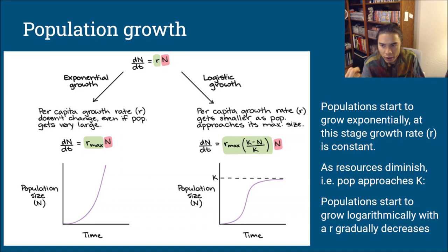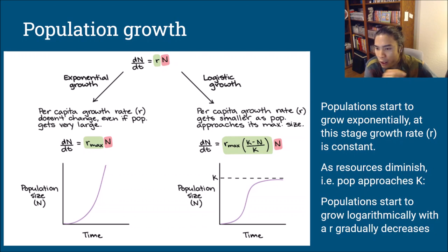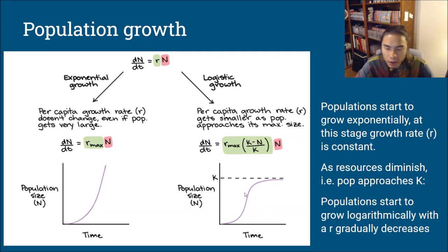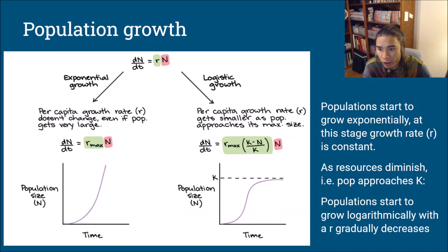Populations usually grow exponentially at the beginning — you start off small but as you get more organisms you have more mating and the population shoots up. But there's a carrying capacity involved, so as you get close to it, resources diminish, it's harder to survive and produce offspring that can also survive, and you start to plateau — converting from exponential to logarithmic growth. Growth rate R is constant during exponential growth, but during logarithmic growth R gradually decreases the closer you get to carrying capacity.